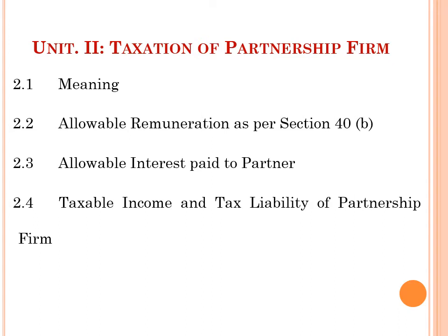Unit 2 is Taxation of Partnership Firm. In this unit we are focusing on one type of business entity — the partnership firm. Firstly we will study the meaning of partnership firm, then allowable remuneration as per Section 40B, allowable interest paid to partners, and finally taxable income and tax liability of the partnership firm — how to calculate taxable income and determine tax liability.